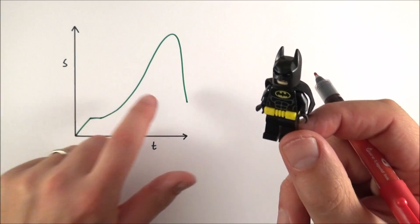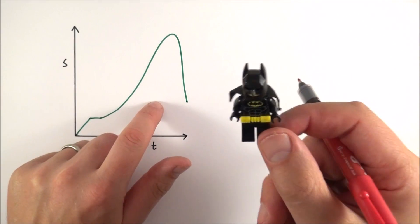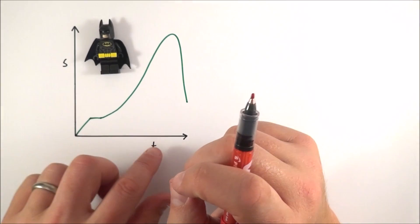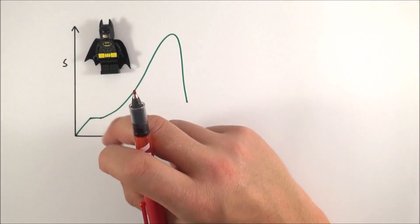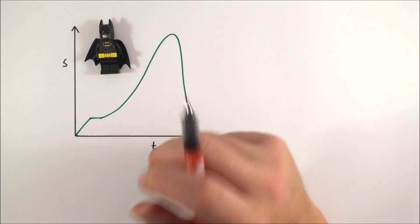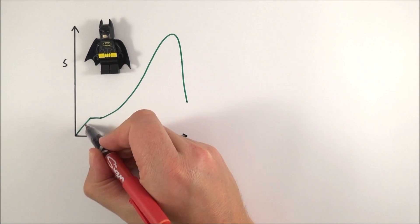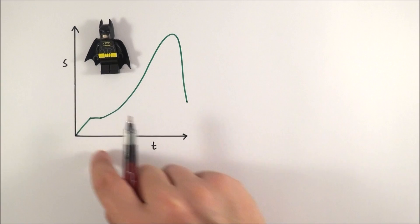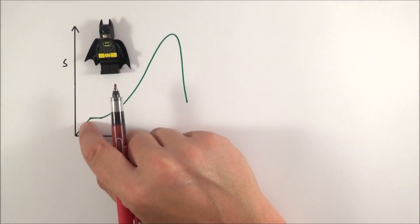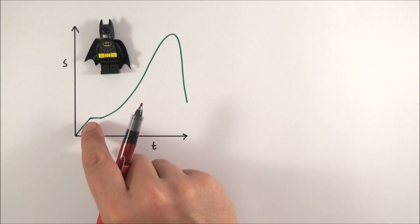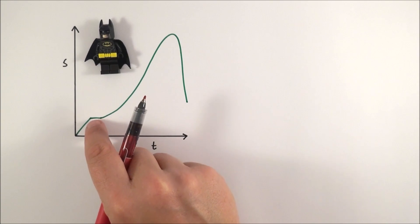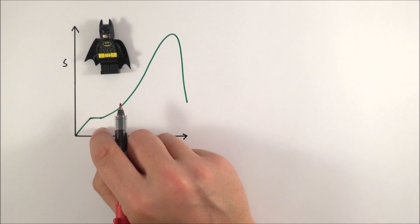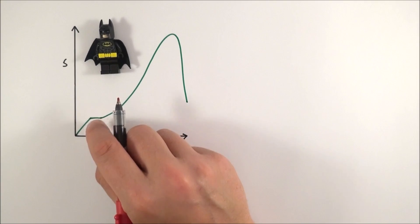This is Batman and what he's been up to. We've captured his motion on a displacement versus time graph and there are certain key features you need to understand. First, when you have a straight line, that means there's a uniform increase in displacement with time and therefore a uniform velocity. We then have a point where the gradient is zero, meaning the instantaneous velocity at that time is zero.